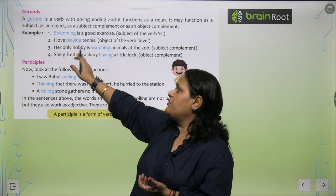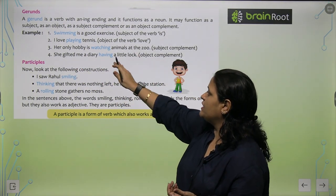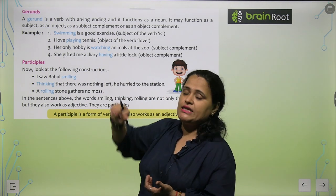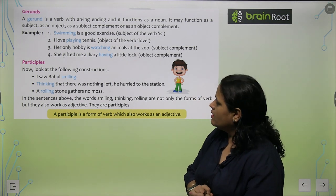She gifted me a diary having a little lock. So here having a little lock is the object complement, complementing diary.